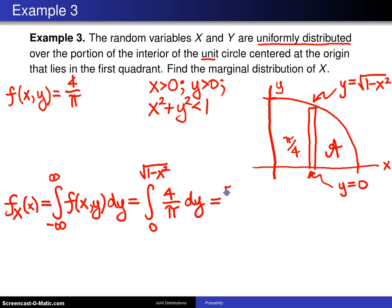And 4 over π integrates to 4y over π that gets evaluated from 0 to the square root of 1 minus x squared. And so that turns out to be 4 times the square root of 1 minus x squared divided by π minus 0.